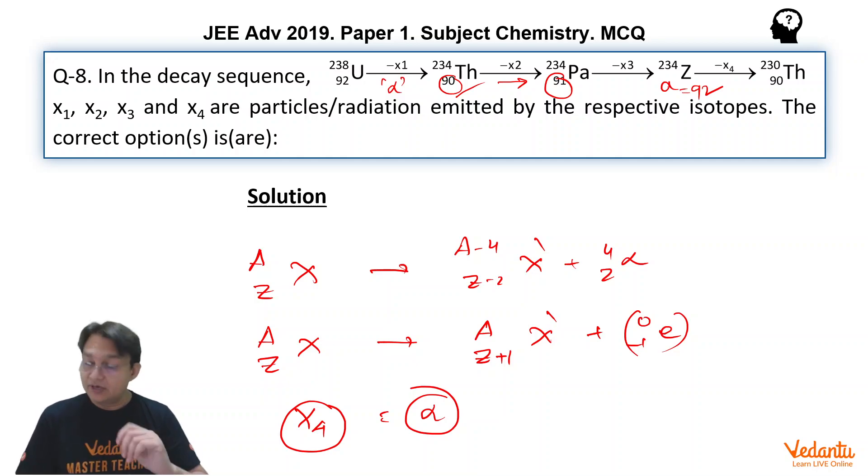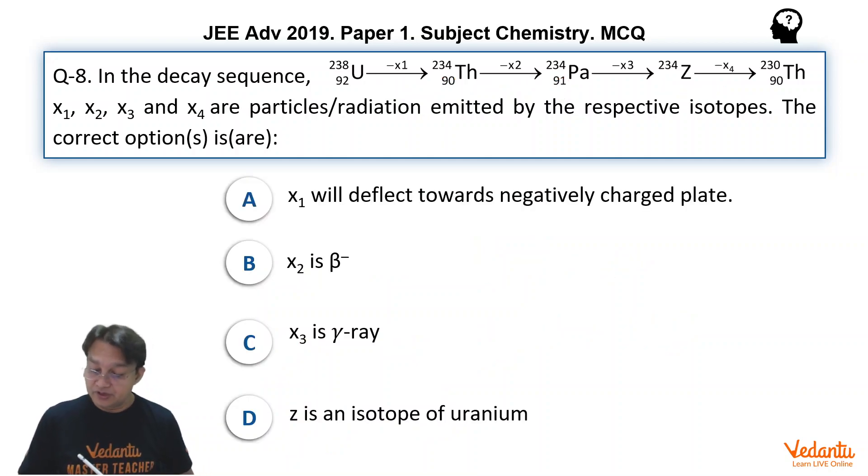Based on this, so let us see what are the available options and how to choose it. X1 will deflect towards negatively charged particles, seems to be the right option because alpha particles are deflected towards negative plate.